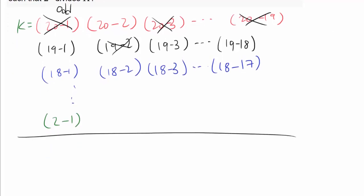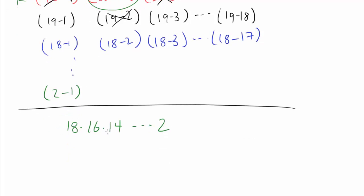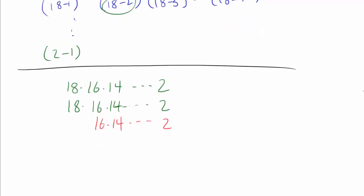So which ones do we really care about? We care about 20 minus 2 (which is 18), 20 minus 4 (which is 16), then 14, all the way to 20 minus 18 (which is 2). We also care about 19 minus 1 (which is 18), 19 minus 3 (which is 16), all the way to 19 minus 17 (which is 2). For 18 we start with 18 minus 2 (which is 16), then 18 minus 4, all the way to 18 minus 16. For 17 we start with 17 minus 1, 17 minus 3, all the way to 17 minus 15. We don't care about 2 minus 1, but we care about 3 minus 1.